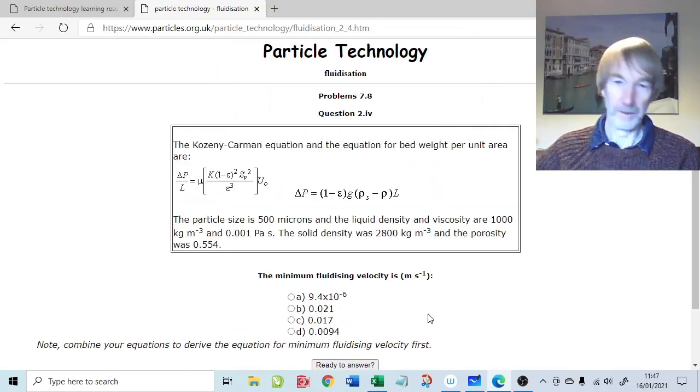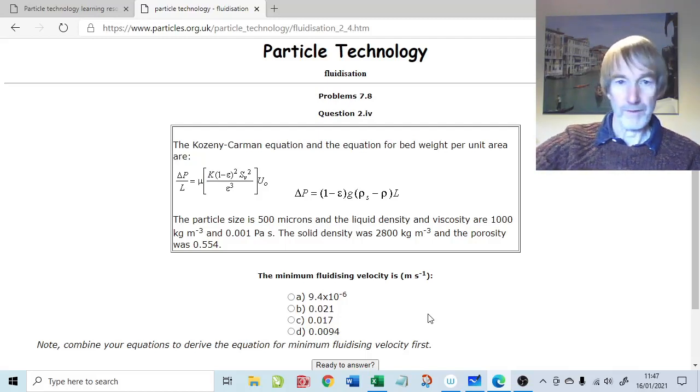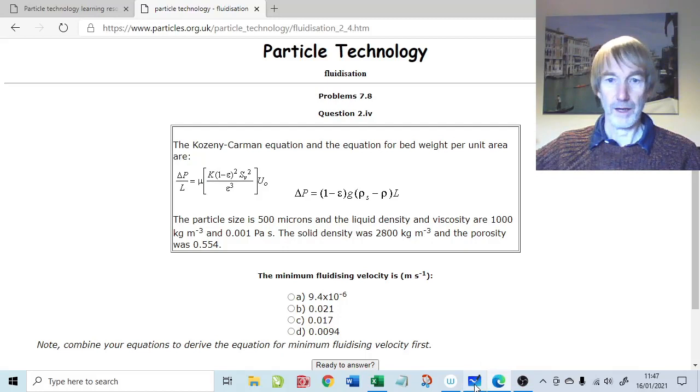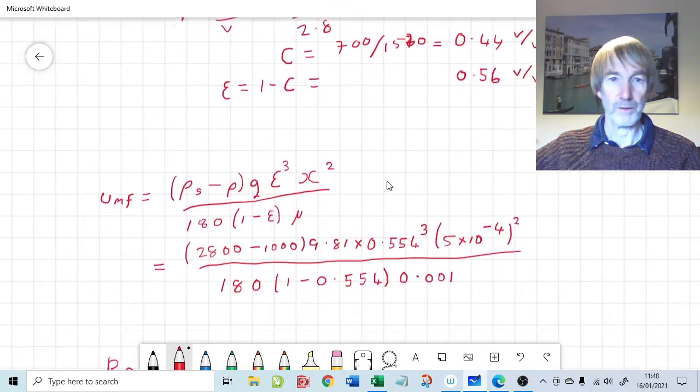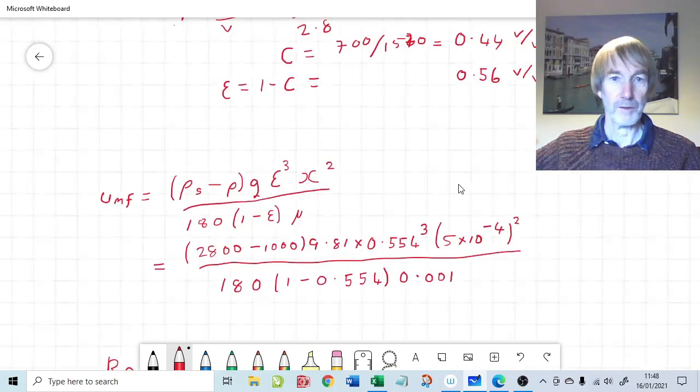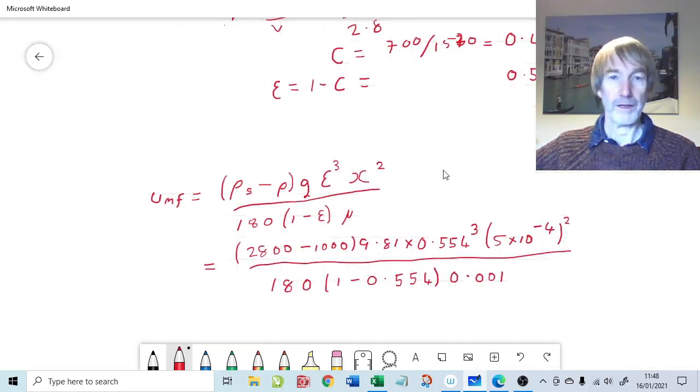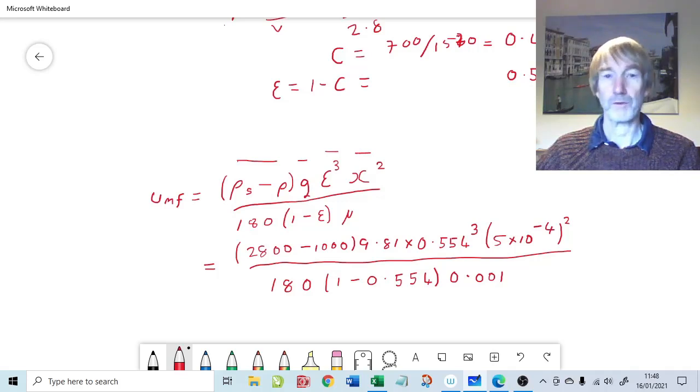This is where it now starts to get a bit more complicated. We derived the equation for the minimum fluidizing velocity in the previous question. There it is. Umf is equal to the density difference between the solids and the fluid, then the acceleration due to gravity, the voidage that we've just calculated, 0.554, the diameter of the particles, they're 500 microns, one minus the voidage, and then the viscosity of water, 10 to the minus 3.